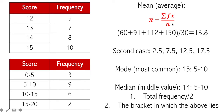Now we're going to look at tables. In some SAT questions the data is grouped and it's useful to know the formulas to calculate mean and median. When one value occurs 5 times and another occurs 7 times, the formula asks us to multiply each score by its frequency, find the product for each row — for example 60, 91, 14×8=112, 15×10=150 — add all of them together (that's what the sigma sign is for), then divide by the total frequency: 5+7+8+10 = 30. That gives the mean.